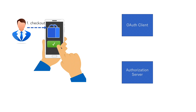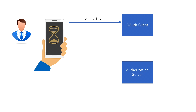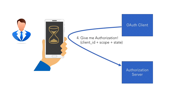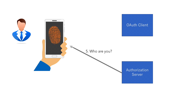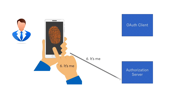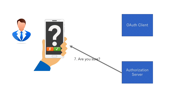A user asks for a service from a web-based OAuth client through a browser. The browser sends a request to the client, and the OAuth client then creates the authorization request. This request is sent to the authorization server through the browser redirect. Then the authorization server authenticates the user, shows what is asked by the client,